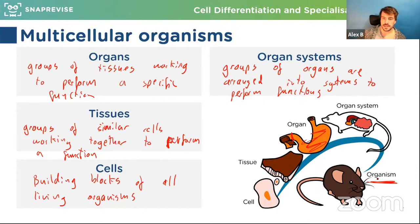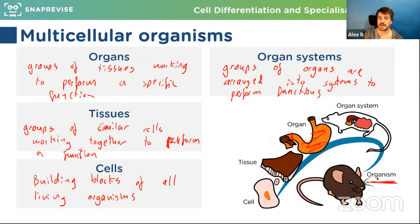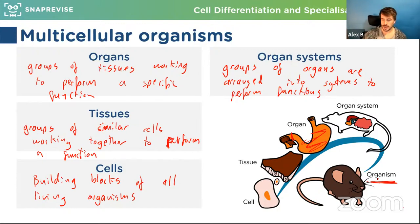An epithelial cell is one that lines the edge of a tissue. You've got them in your respiratory system lining the alveoli and the trachea, inside your digestive system, and on your skin. It basically demarcates the boundary between a tissue and the external environment — like a skin or layer at the edge of a tissue. That's actually where we get the word epidermis from — the same root as epithelial.